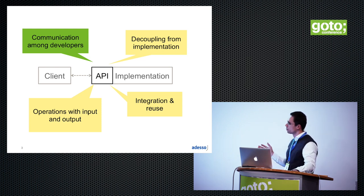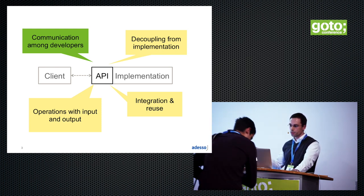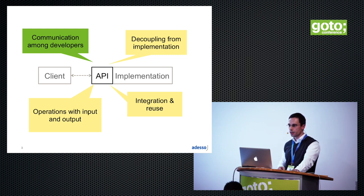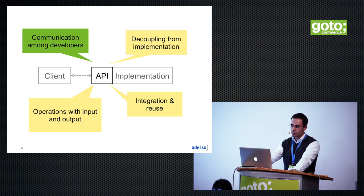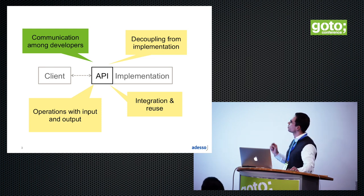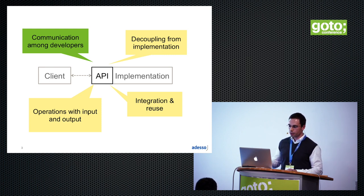On a very high level, you have this scenario: there is a client that uses the implementation of a component or service, and it is done through the API. This is the external visible operations with input and output, and this is the kind of contract that is made between the client and that component or service. Of course, there is no contract between the client and the implementation, which brings us the decoupling from the implementation, so that could be changed or could have a completely different stack.